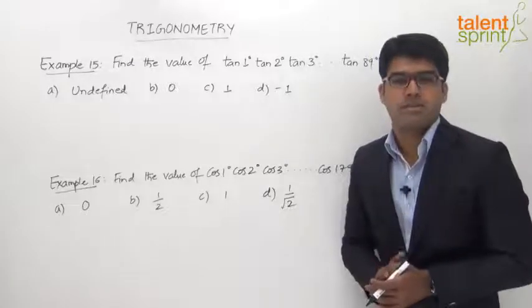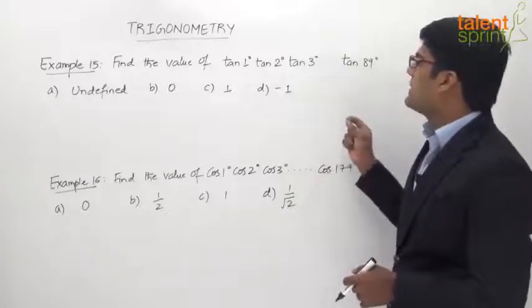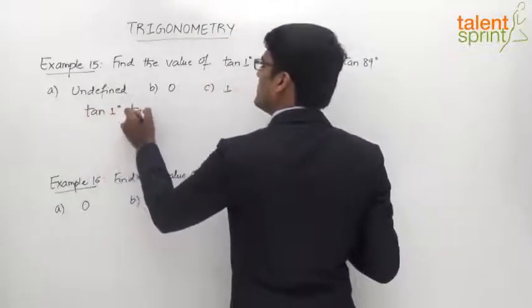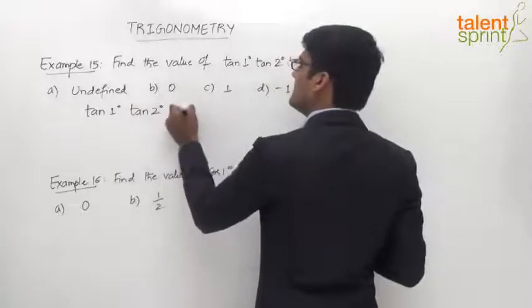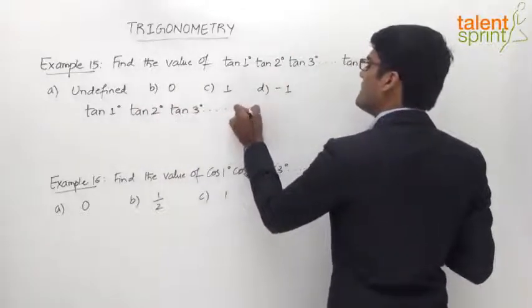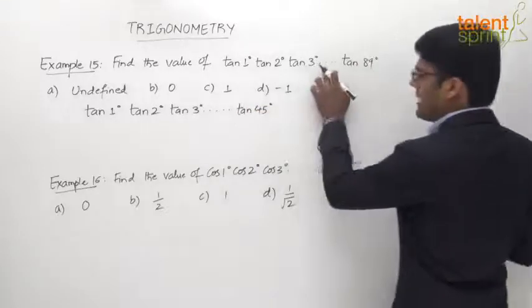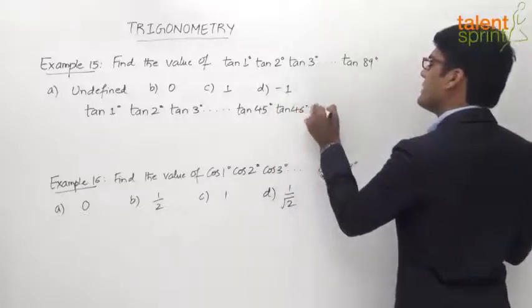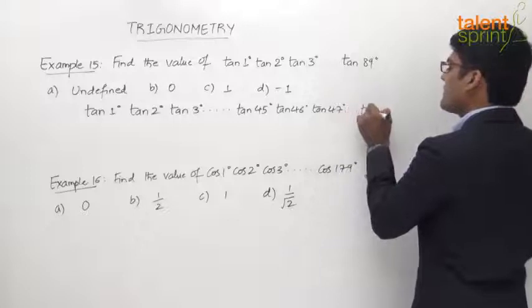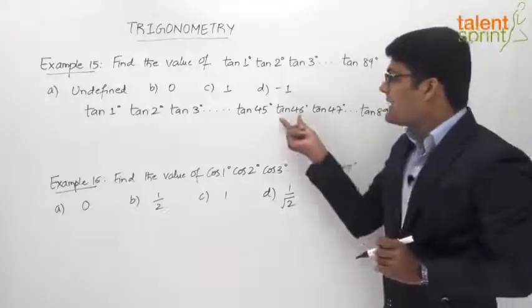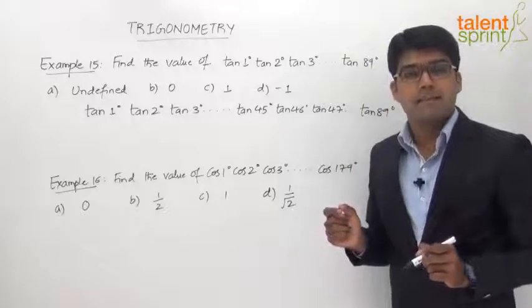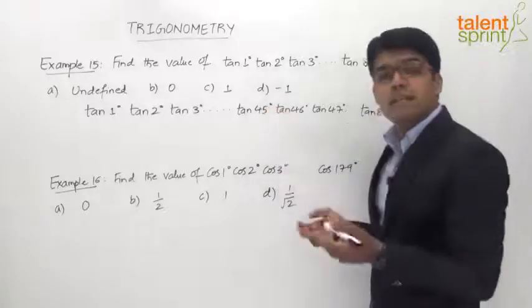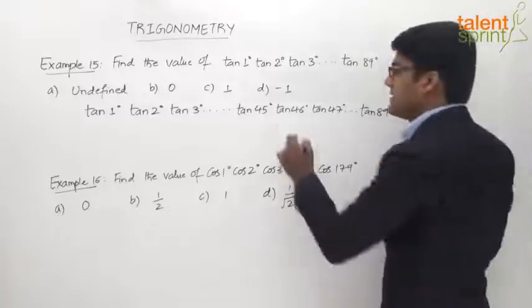Looking at the expression tan 1° × tan 2° × tan 3° ... up to tan 89°, we can write it as tan 1° × tan 2° × tan 3° ... up to tan 45° in the middle, then tan 46° × tan 47° and so on up to tan 89°. Now, tan 46° can be expressed as tan(90° - 44°), and tan(90° - 44°) equals cot 44°.